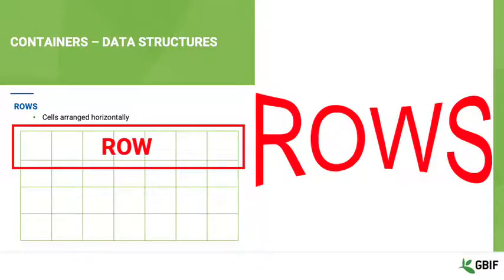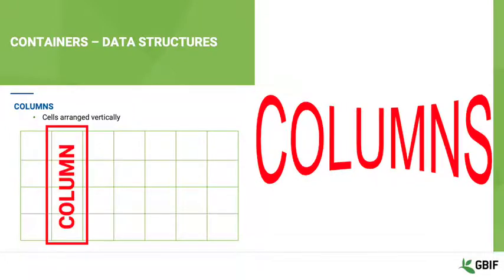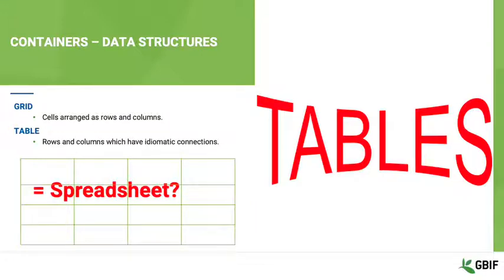As you start to organize cells, you begin to build a grid. Grids have implied structure in the form of rows and columns. When you organize cells into rows and columns, what you get is a grid. This looks very much like a spreadsheet. The difference, however, between a spreadsheet grid and a table is the strength of the ties that hold the rows and columns together.